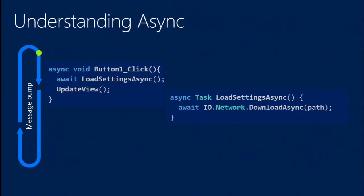Core to understanding async is really getting a sense for how the control flow works — what exactly happens when you're calling into async methods. You've probably written code like event handlers that have awaits in them, and maybe some async task helper methods. But what exactly is happening under the covers as you go through that control flow?